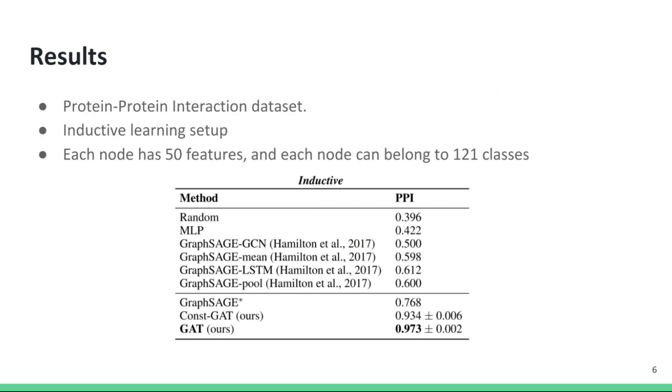We can also see that the graph attention operator, GAT in this table, performs better than GraphSAGE, which is an operator that basically samples a fixed number of neighbors for each node and treats each neighboring node features equally. This is unlike the GAT operator, which weighs the contributions of neighboring nodes depending on their feature vectors and not equally.